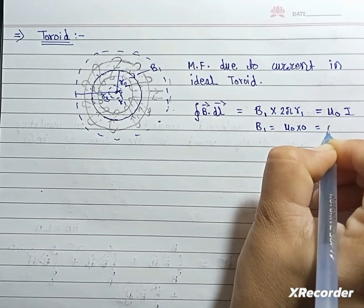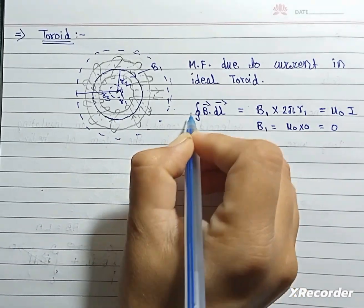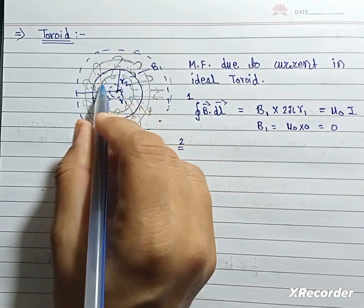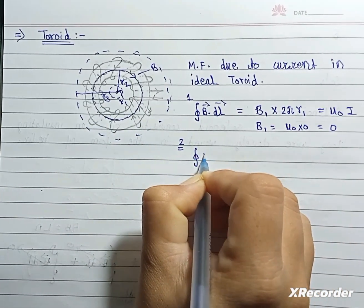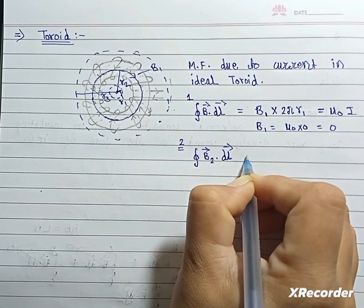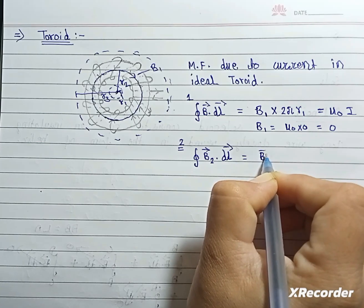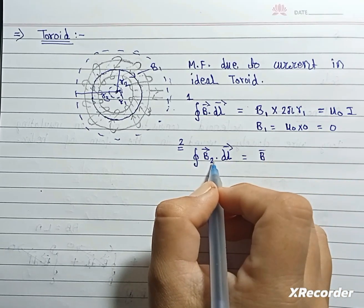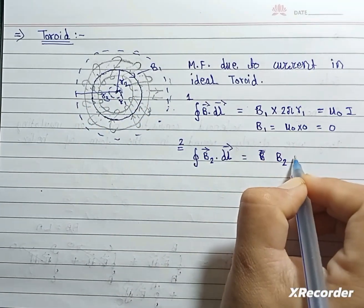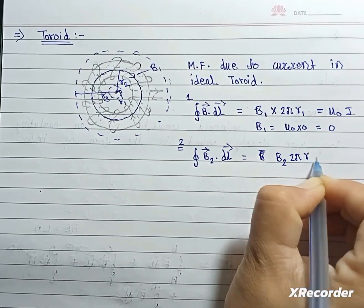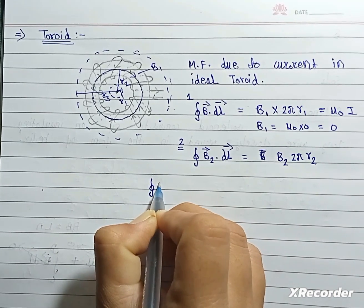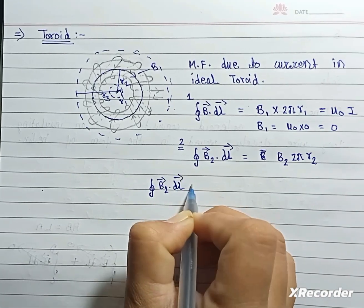For loop first, now for loop second. This is for loop second. Closed integral B represented by B2 dot dL, this is equal to B2. The angle between is also 0, so we can write directly B2 into - for loop 2, the circumference of this loop is 2πr2. This is equal to B2 into 2πr2.